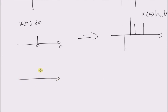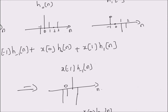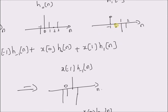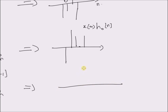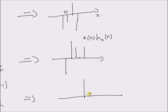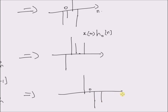Finally, we have the value x(1) multiplied by delta(n minus 1). When you multiply x(1) with h_1(n), we have again a weighted version of this impulse response structure. This is x(1) multiplied by h_1(n).